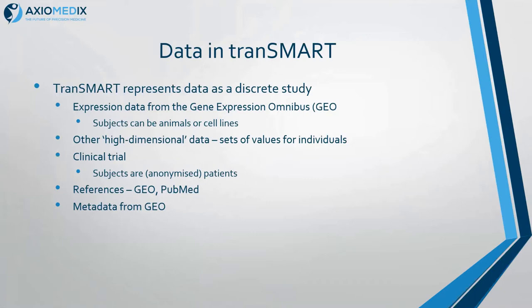In Transmark, we view each dataset as a discrete study. They come from the Gene Expression Omnibus, which is an NIH resource. Subjects can be animals, cell lines, or human subjects — so it's clinical trials plus experimental gene expression data. You get basic data about the cell line or human, and then high-dimensional data — sets of values for individuals within the study. Typically gene expression data; most of the COVID data is RNA-seq data, which matches the genome with counts for each gene.